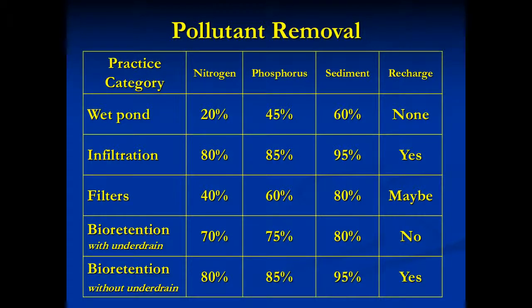Here we see a comparison of the relative effectiveness of the three BMP types. Clearly, infiltration and bioretention without an underdrain removes the most pollutants and also allows the treated runoff to recharge the groundwater table. This recharge provides the dry weather inflow to wetlands, streams, and other waters. Filters can provide recharge too, unless they are fitted with an underdrain. Underdrains are used where soil is not very permeable or there is a shallow depth of rock or water.